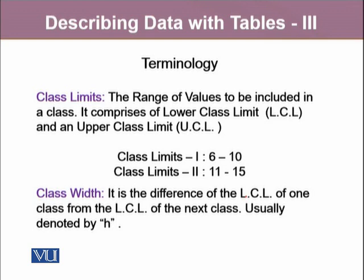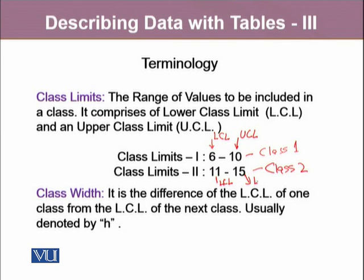For example, where we have two classes — class 1 and class 2 — for the first class, 6 is the lower class limit and 10 is the upper class limit. Similarly, for the second class, 11 is the lower class limit and 15 is the upper class limit.